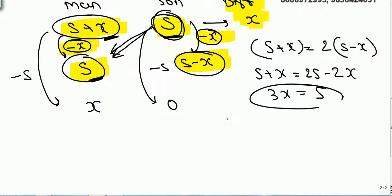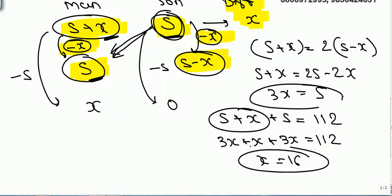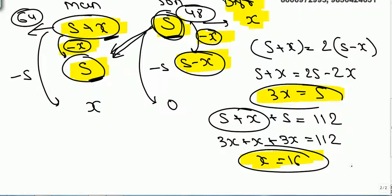The summation of their present ages is given as 112. Man's present age is s plus x, son's present age is s, so 3x plus x plus 3x equals 112 — wait, that gives 7x equals 112, so x equals 16. Son's present age is 3x, that is 48, and man's present age is 3x plus x, that is 64.